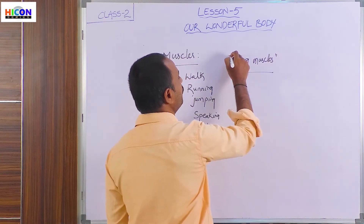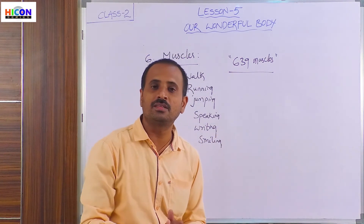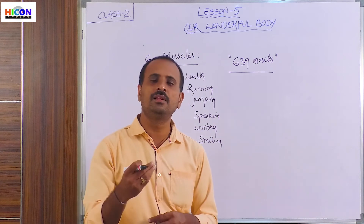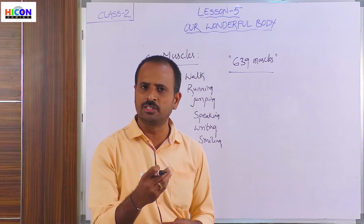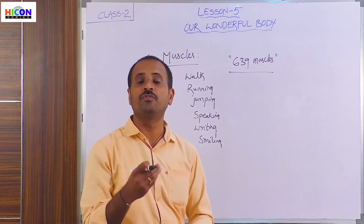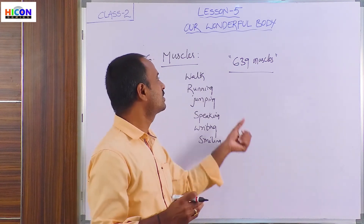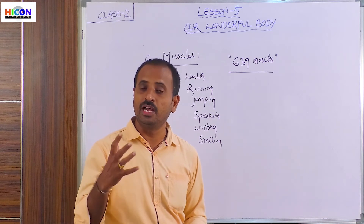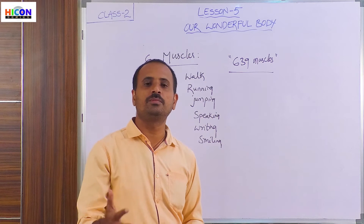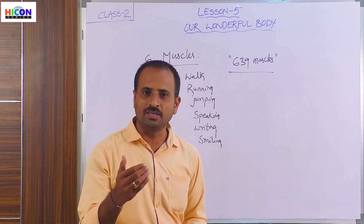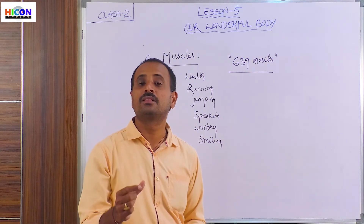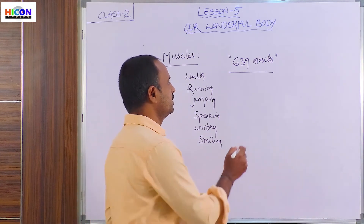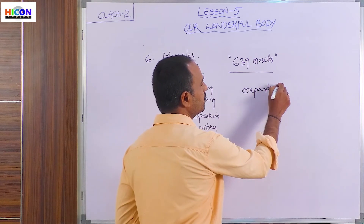There are different types of muscles, and in total there are 639 muscles in our body. Each and every organ is made up of various types of muscles. These muscles are very helpful to move, walk, run, jump, and do various activities in our daily life. Generally these muscles will expand and contract while we are moving.